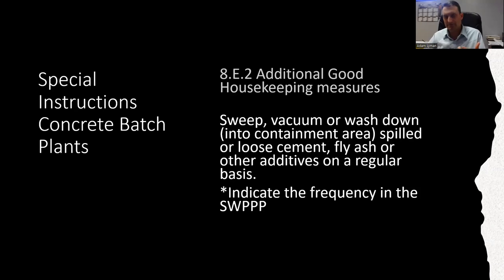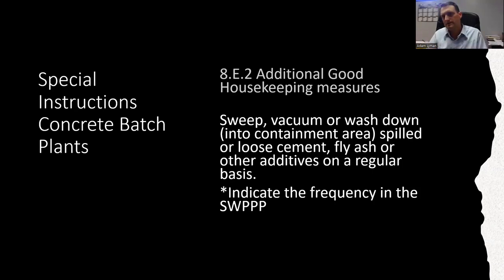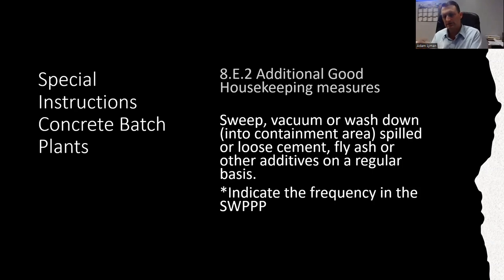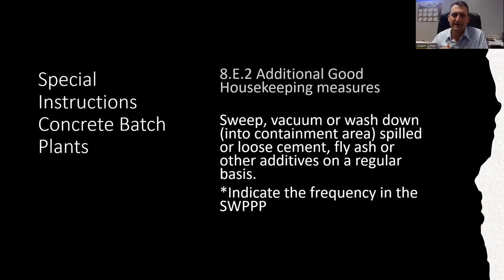Concrete batch plants have a couple of extra requirements beyond the general permit. Section 8.E.2 — section 8 of the multi-sector general permit has all the specifics for individual sectors. For concrete batch plants, there are requirements to sweep back and wash down into the containment area — you wouldn't be able to discharge wash water. You need to clean spilled or loose cement, fly ash, or any other additives regular to your process, and you have to indicate how frequently you'll do this cleanup in your stormwater pollution prevention plan.